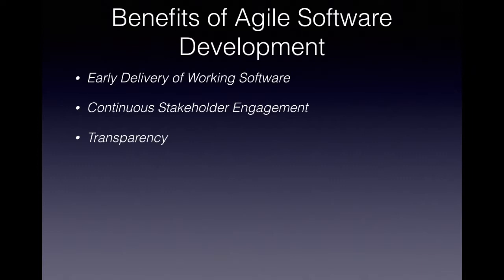There is a high level of transparency in the whole agile software development process. Everyone is aware of what each individual in the team is working on because of daily stand-up meetings, and during sprint planning the business stakeholders know what the whole team's goal is to achieve as part of that sprint. Transparency is another key benefit of agile software development.